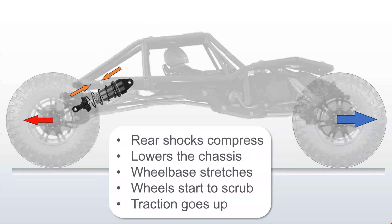What happens with overdrive is the rear shocks start to compress, the chassis lowers, your wheelbase stretches, and the wheels start to scrub. The wheel with the less weight pushing on it is the one that scrubs or slips first. But having the two wheels work against each other causes your traction to go up.